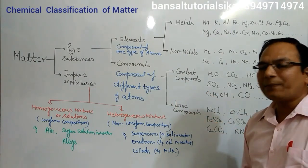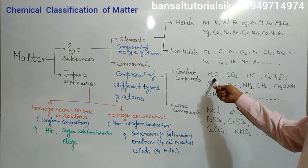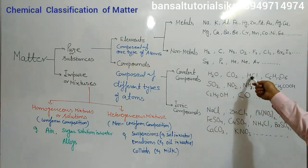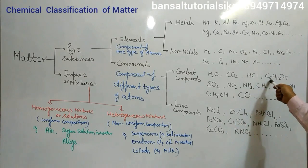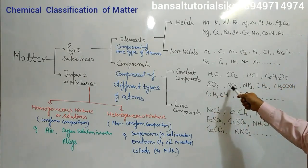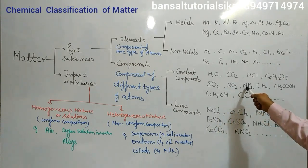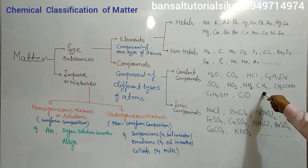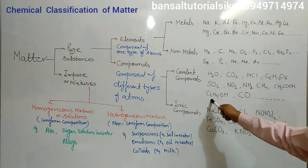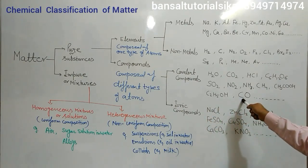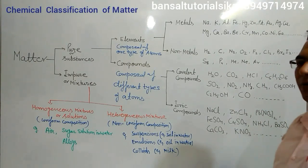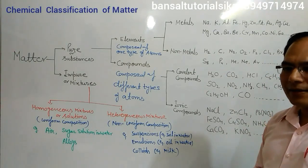Some examples of covalent compounds are water H2O, carbon dioxide CO2, hydrogen chloride HCl, glucose C6H12O6, sulfur dioxide SO2, nitrogen dioxide NO2, ammonia NH3, methane CH4, acetic acid, ethanol, and carbon monoxide CO. Many more examples can be given for covalent compounds.